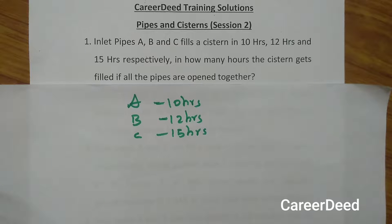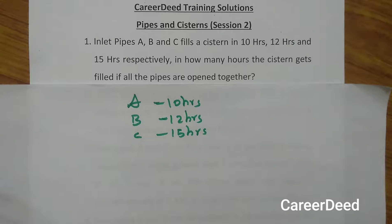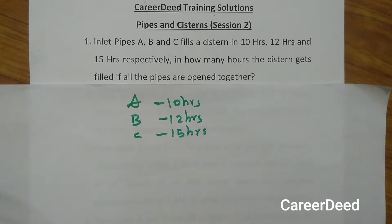Welcome back to Karated Training Solutions. I'm Mohan and this is lesson 2 on pipes and cisterns. This video is a continuation of my previous video where we discussed the basics of negative efficiency. If you haven't watched that, I've given the link in the description box. Please do watch it to get a clear picture about the topic.